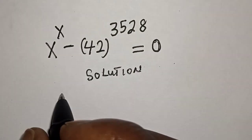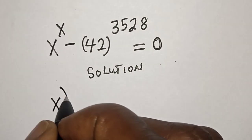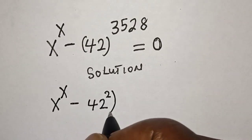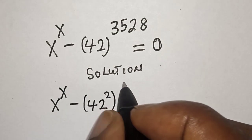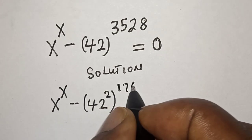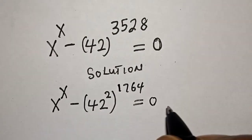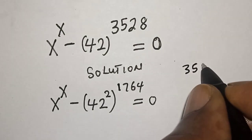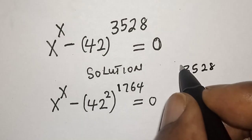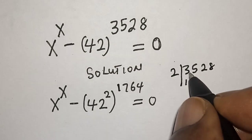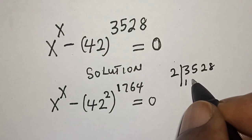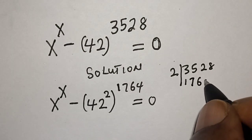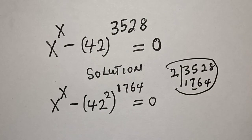This is x raised to power x minus 42 squared, raised to power 1764, is equal to 0. How do we get this 1764? If you have 3528 and you divide by 2: 2 into 3 is 1 remainder 1, in 15 that is 7, then 2 into 12 is 6, and 2 into 8 is 4. So that is how we get the value 1764.